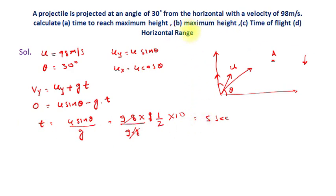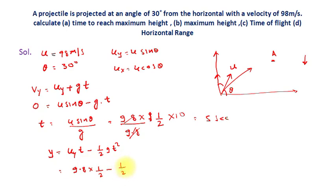Now for part B, maximum height. We write Y = Uy·T − (1/2)·G·T². At T = 5 seconds, Uy = U·sinθ = 98 × (1/2) = 49. So Y = 49 × 5 − (1/2) × 9.8 × 25. After calculation, this gives 122.5 meters.